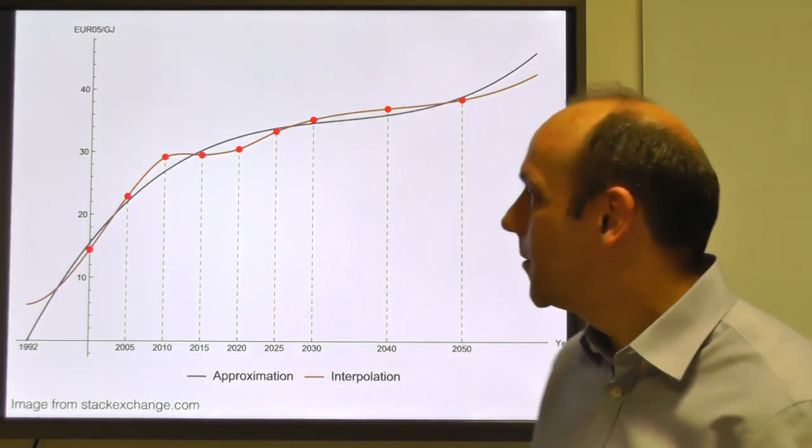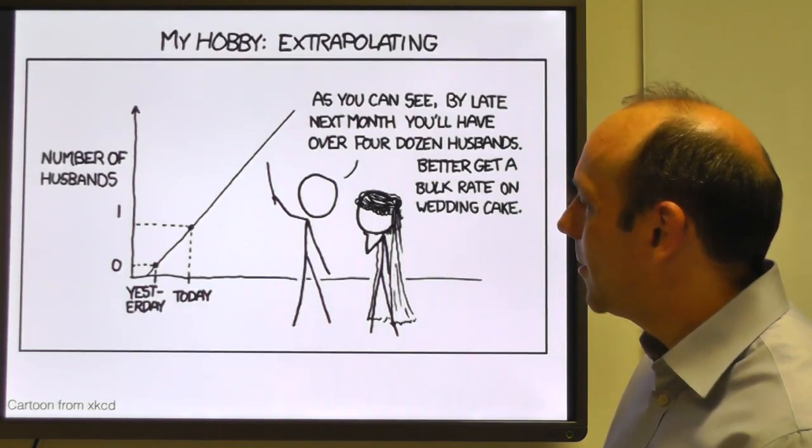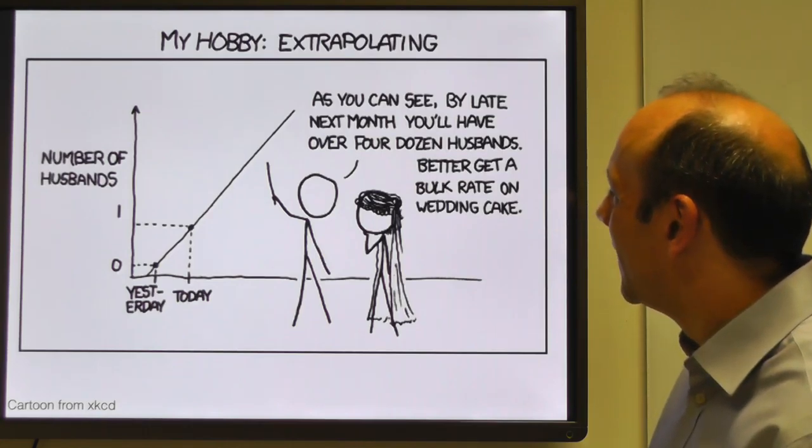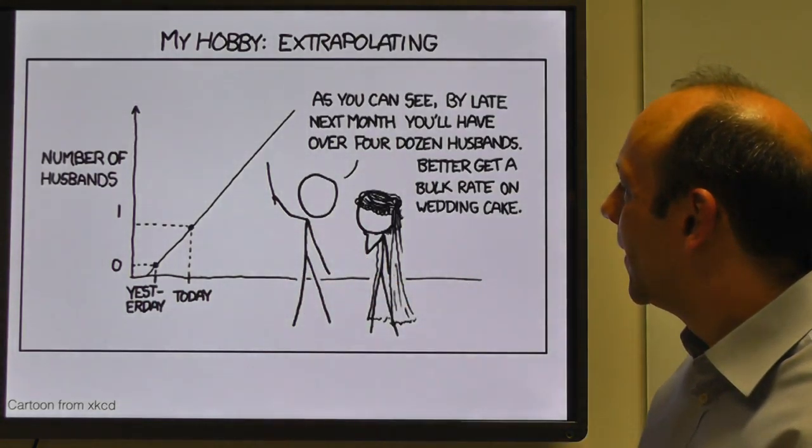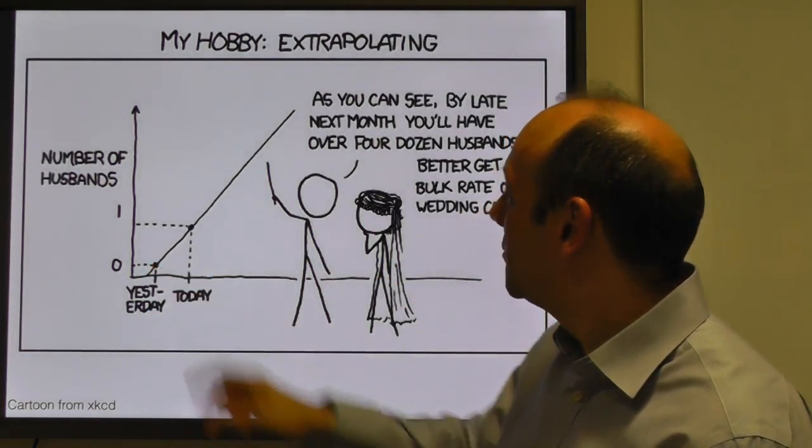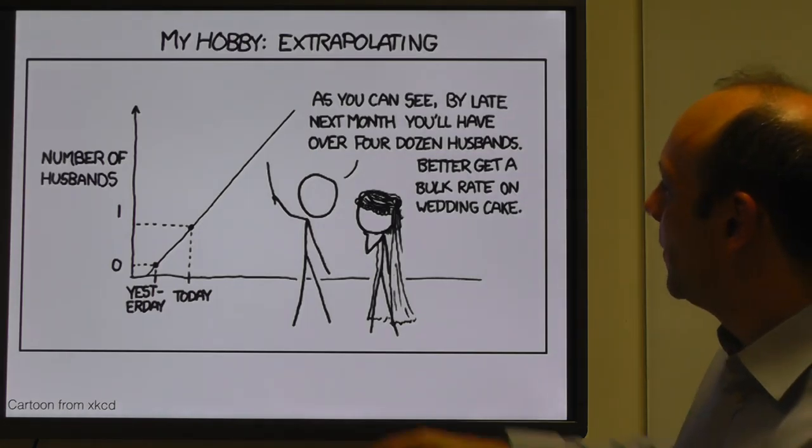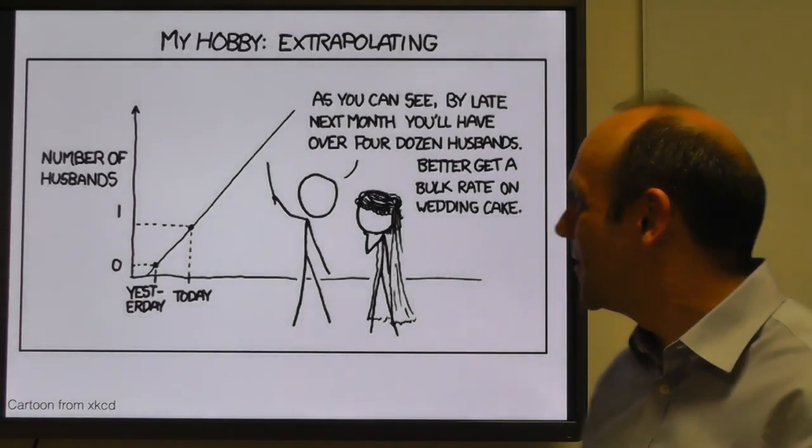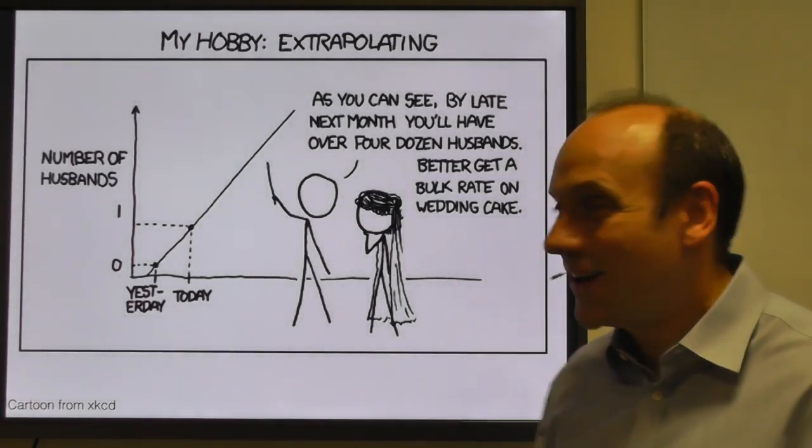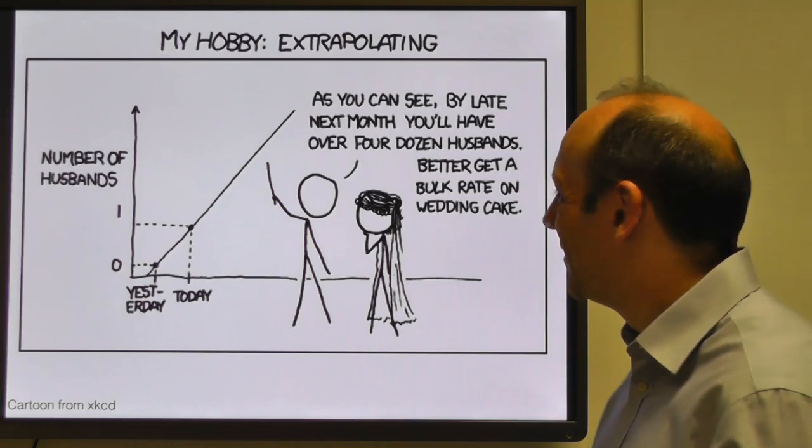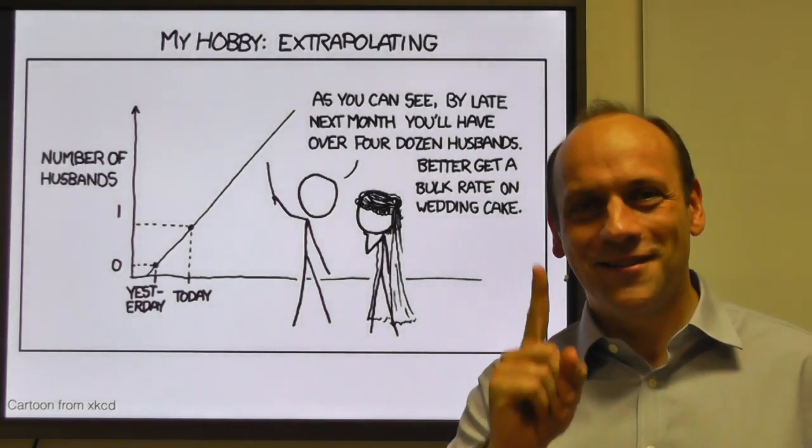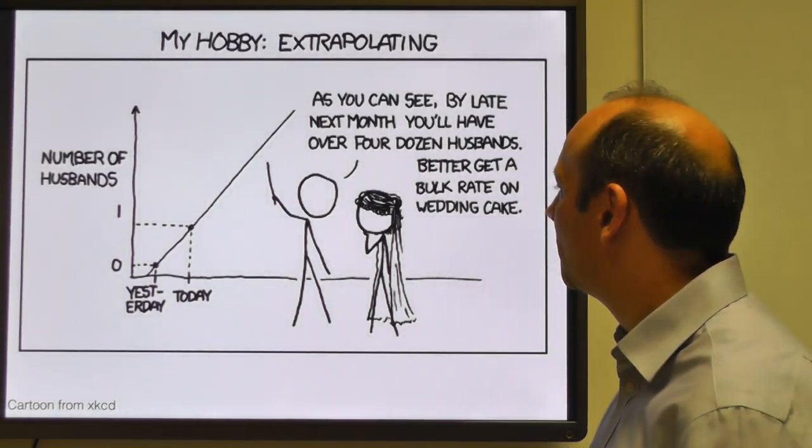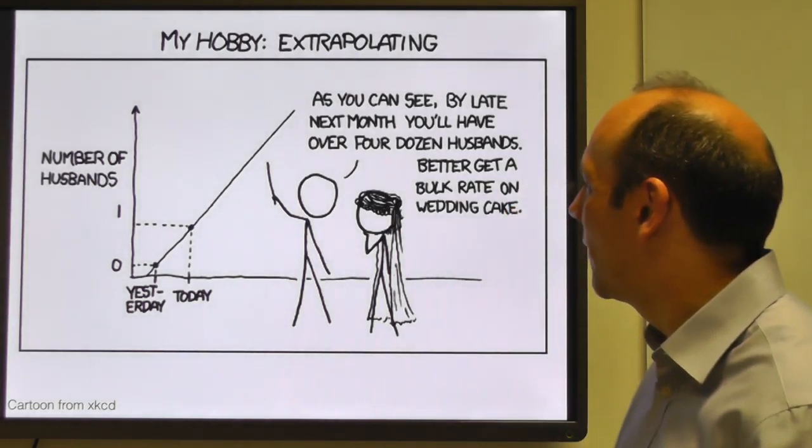Here's another error apart from interpolation. Here's extrapolation. This is a cartoon from XKCD. This is a guy talking to a girl. She wasn't married yesterday and today she's married. And he's extrapolating and predicting by next month she'll have over four dozen husbands. Better get some wedding cake. And of course, that's lunatic. She's not going to have four dozen husbands. She gets married once in her life, hopefully.